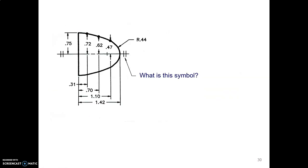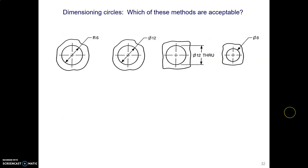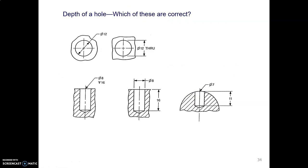Do you remember what this doodad is? This is a symmetry symbol. Now, which of these is okay? We've got a radius, a diameter, a diameter, diameter. All of them are okay except for the radius. Never, never dimension a circle with a radius.